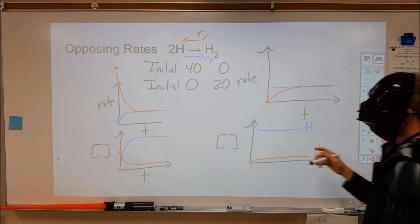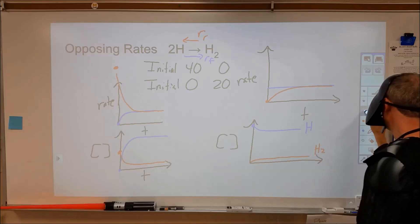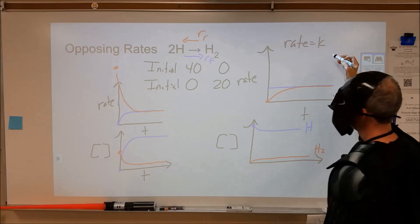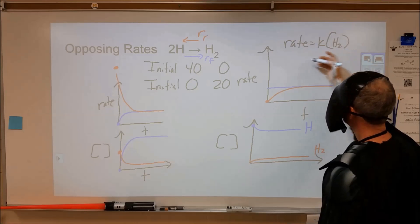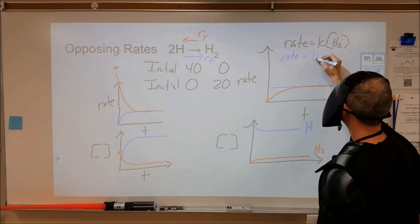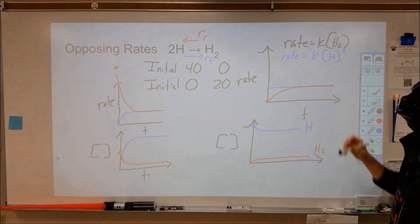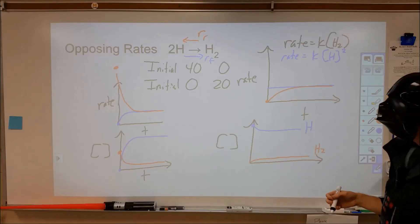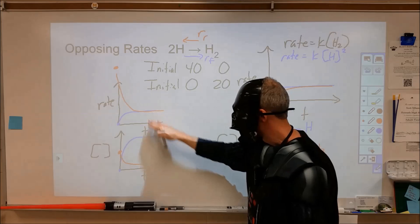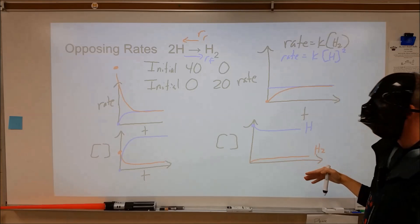Concentration will affect how the rate can occur, similar to what we've seen in kinetics. The forward rate equals K times the concentration of reactants, and the reverse rate equals K times the concentration of products. When those two rates become equal, that is the point at which we've reached equilibrium. The rates become equal in both instances, but the concentrations do not become equal — however, the concentrations do become constant when equilibrium is reached.